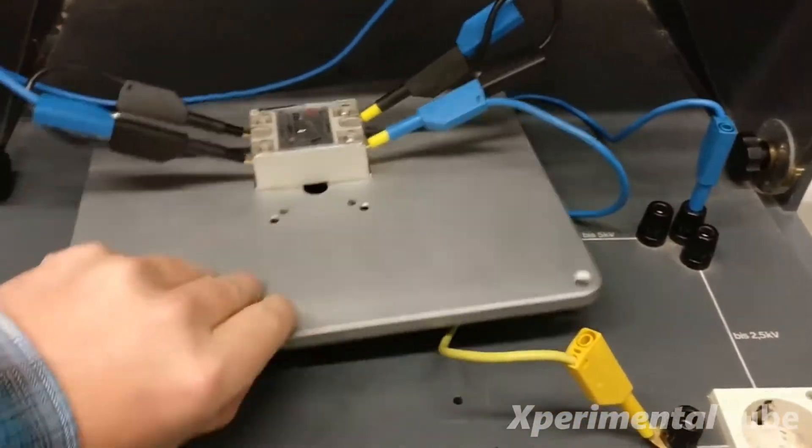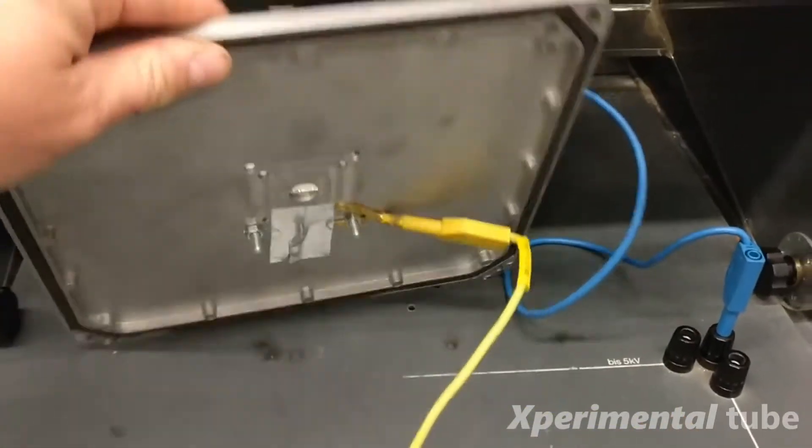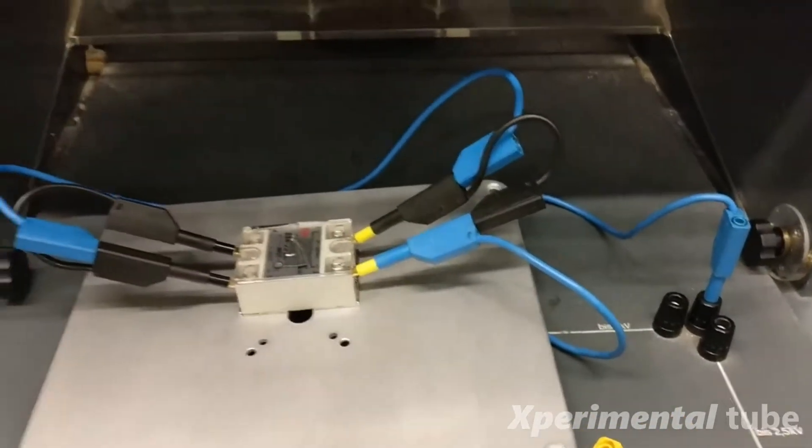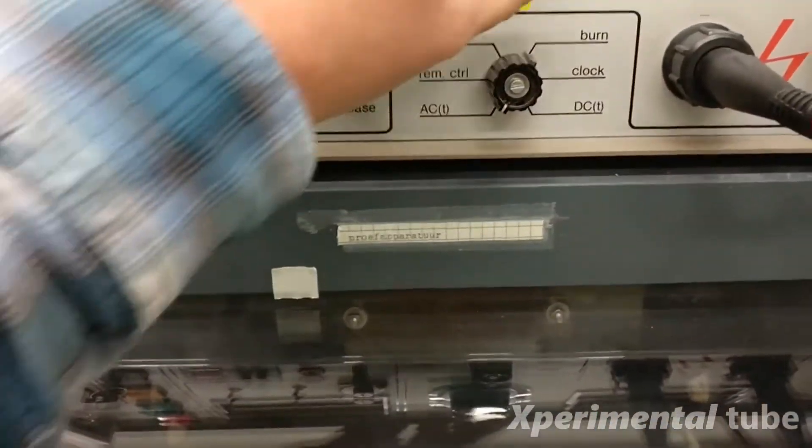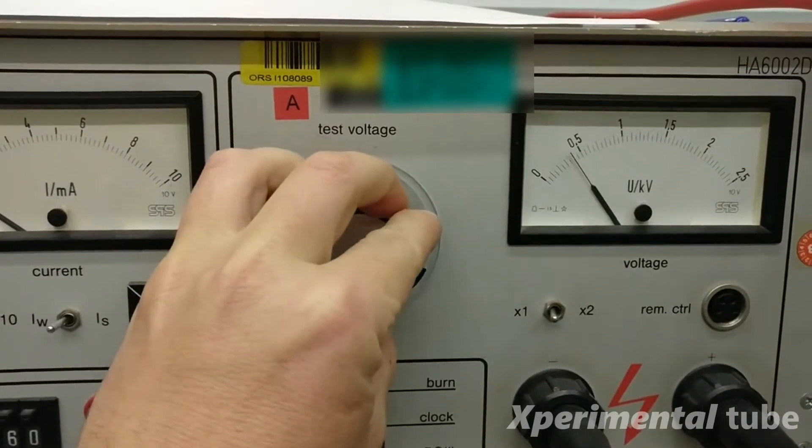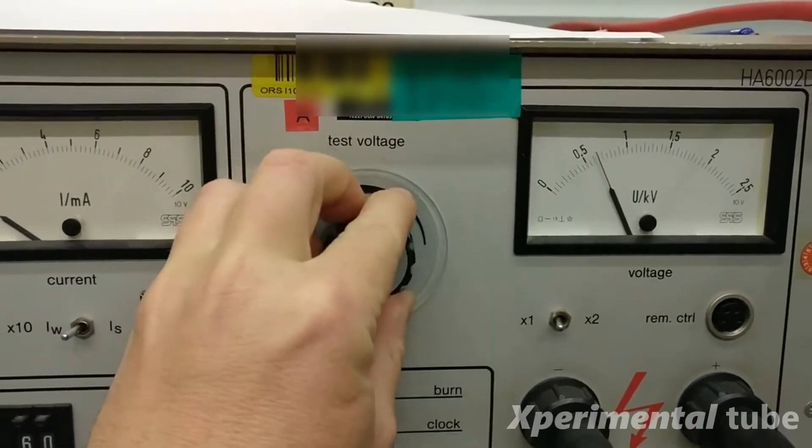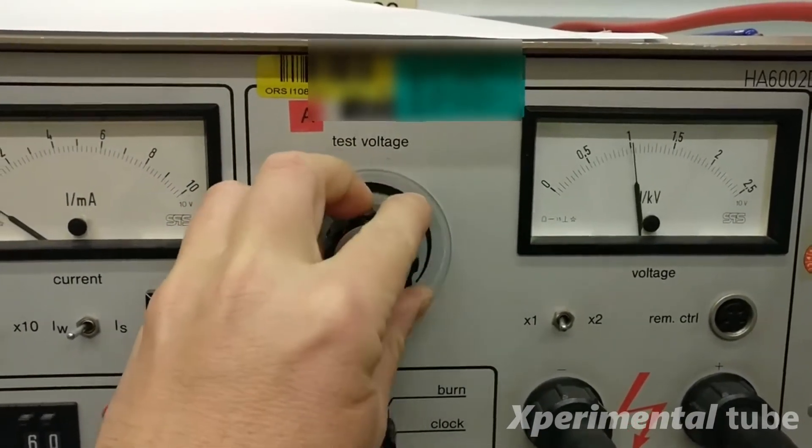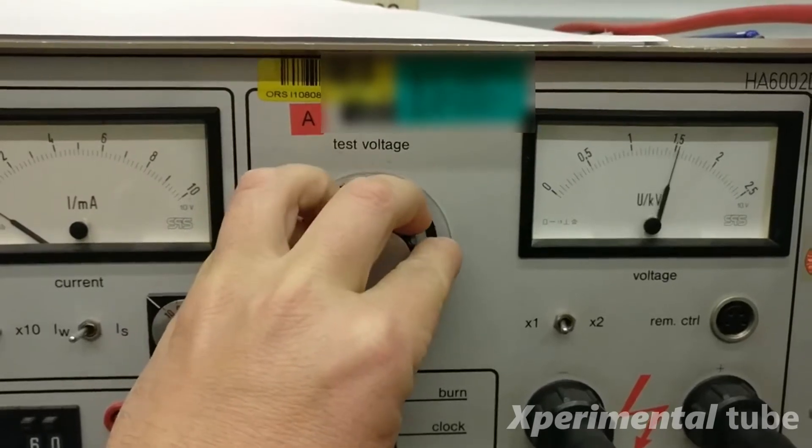So now I will perform the dielectric strength test between ground and AC-DC. So this is a safety test. So we turn it up again to 2.5 kilovolts which it should also pass according to the official relay manufacturer data. So let's have a look.